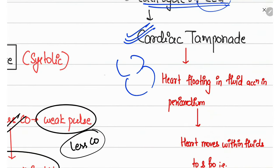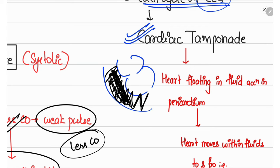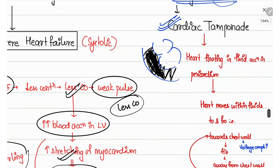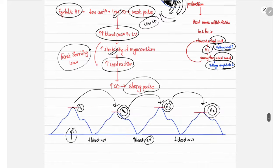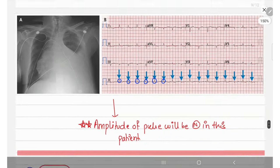Electrical alternans occurs in cardiac tamponade. The heart is surrounded by a pericardium filled with fluid, causing the heart to float within that fluid. With each cycle, the floating heart moves toward the chest wall and then away from it. When the heart moves close to the chest wall, the voltage amplitude increases; when it moves away, the voltage amplitude decreases — producing alternating QRS amplitude on the ECG.